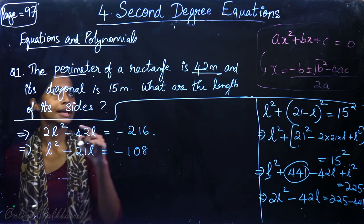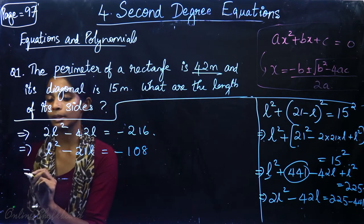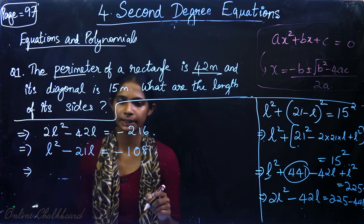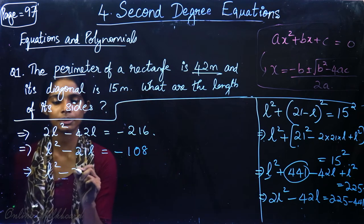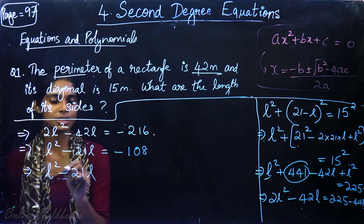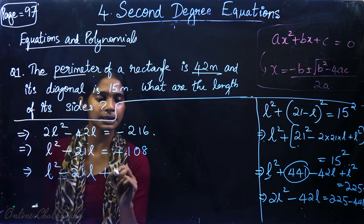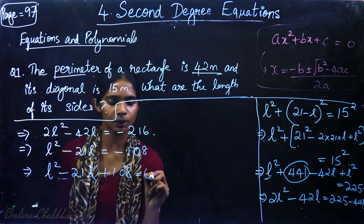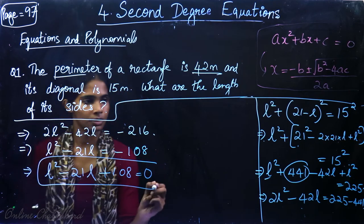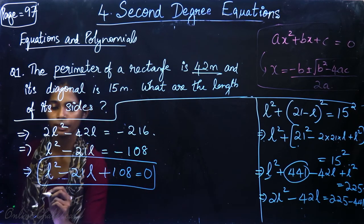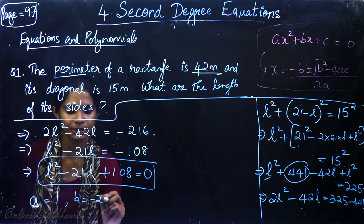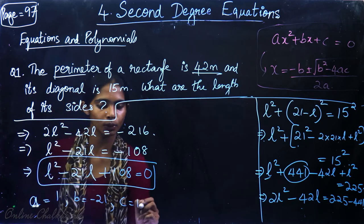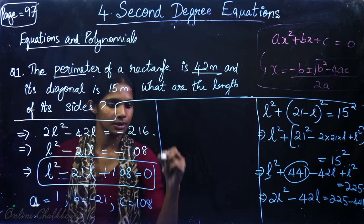Now we have a second degree equation. We can solve using the formula. Setting it equal to zero, we have l² minus 21l plus 108 is equal to 0. So the equation we can solve with a equal to 1, b equal to minus 21, and c equal to 108.